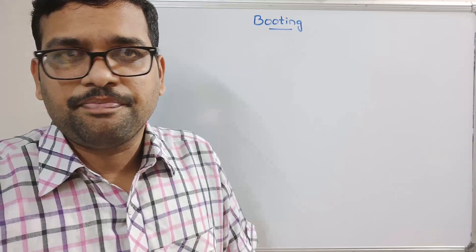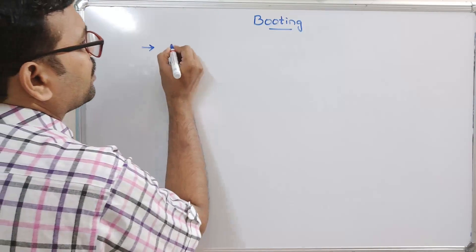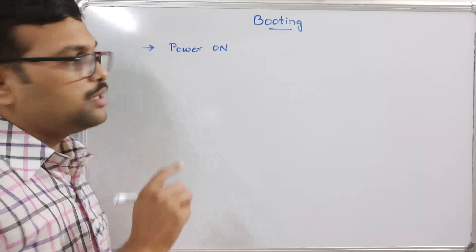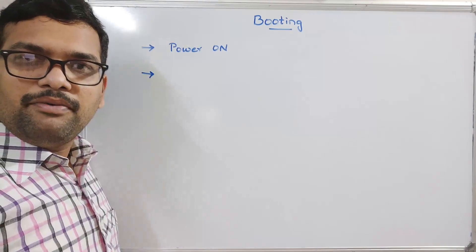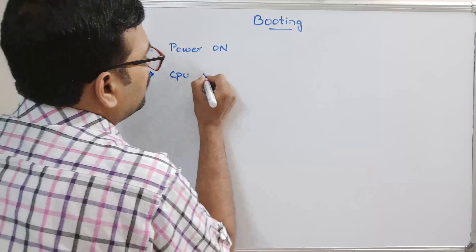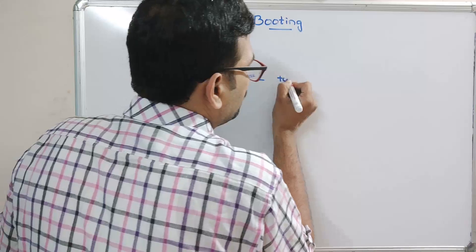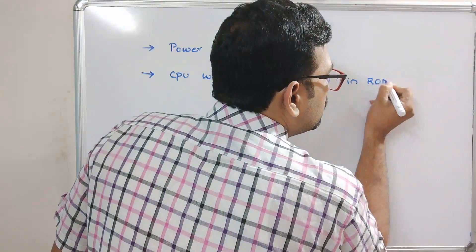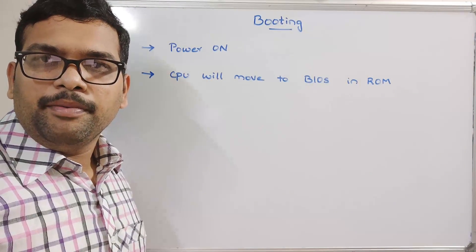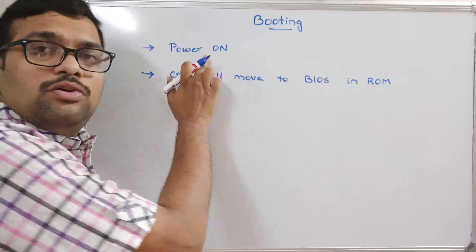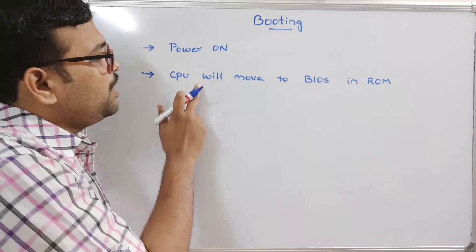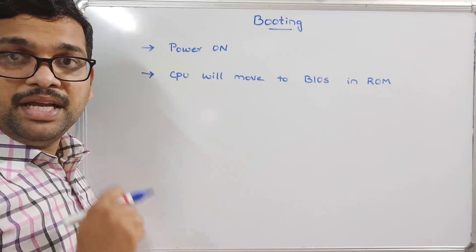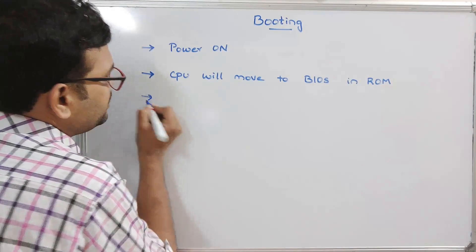The first step is power on — the user clicks the power button. Immediately after clicking the power button, the CPU will move to the BIOS, which is available in ROM — read-only memory. So whenever the user presses the power button, the CPU first moves to the BIOS. BIOS stands for Basic Input Output System.